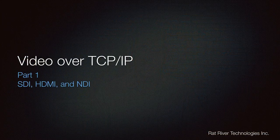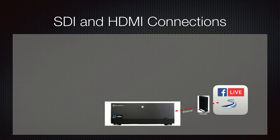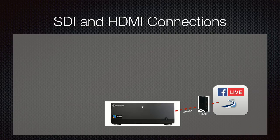I'm just going to bring up a couple of slides here. The first topic for today's show is SDI, HDMI, and NDI. Our second part in this series is going to be doing video over wireless — Wi-Fi and other types of communications. The first part should be very familiar to many of you. We're all using SDI and HDMI connections. This slide shows a typical setup with a computer system, in this case running vMix, but it could be anything.